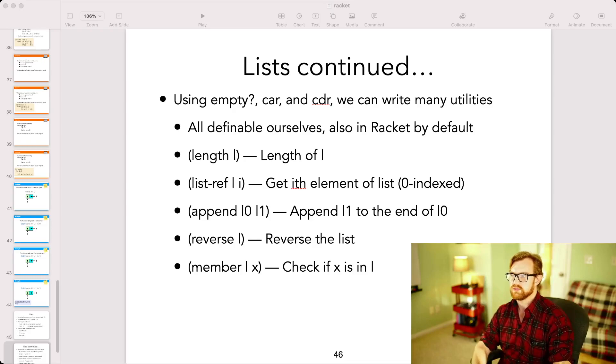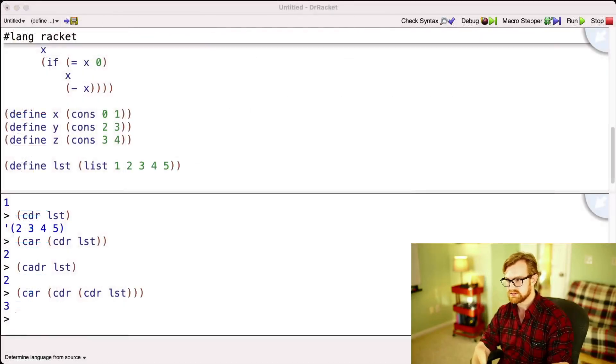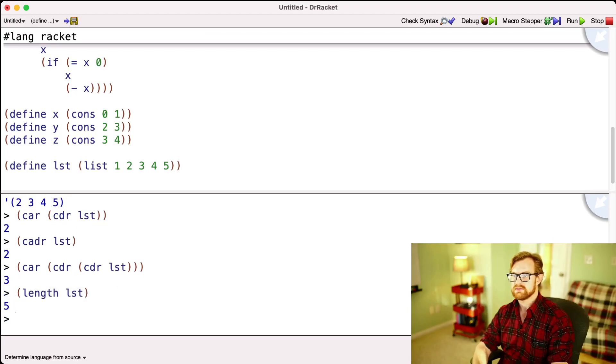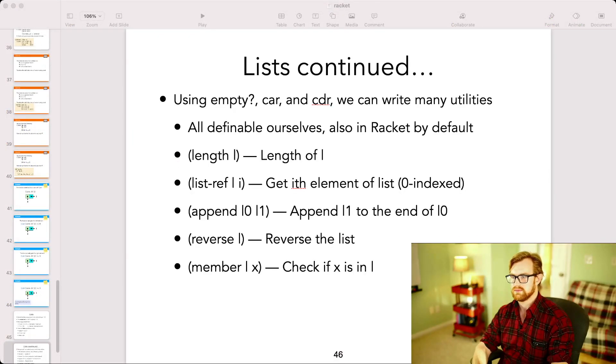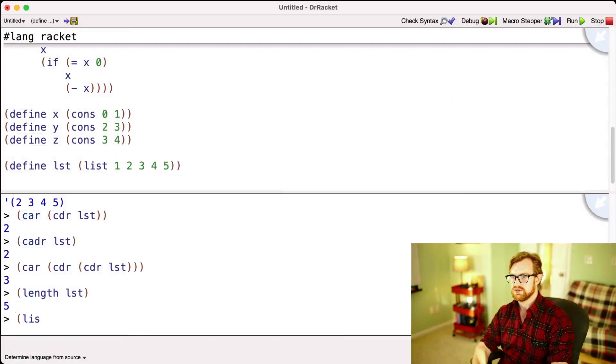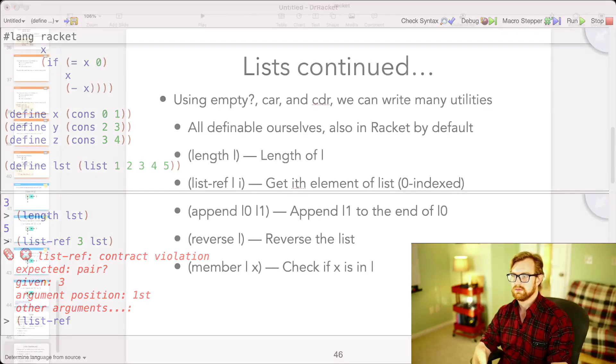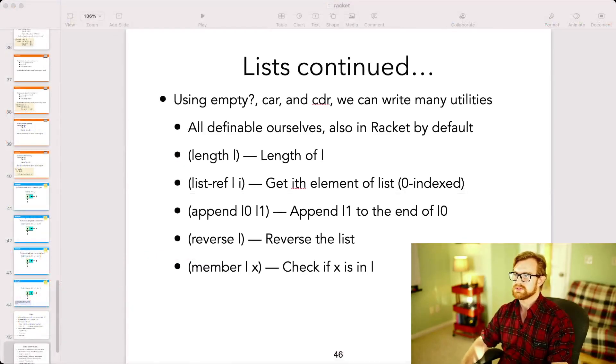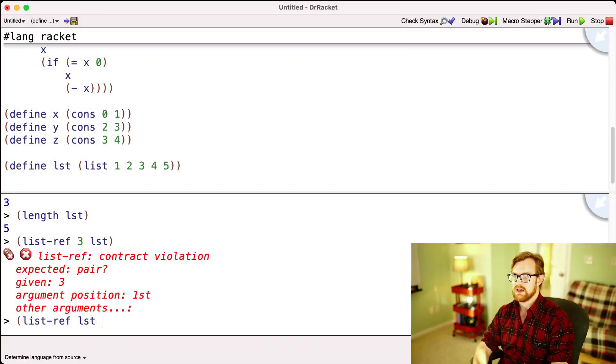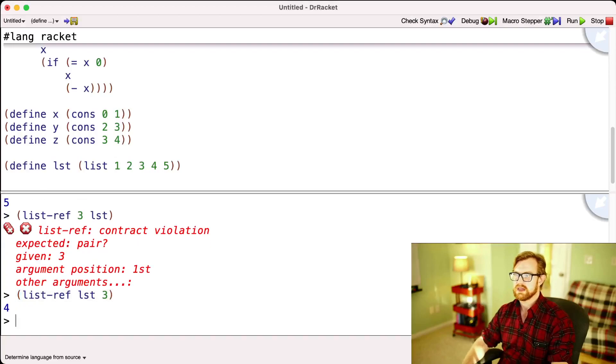So the first one is the function length, which will just calculate the length of the list. So if I go to length of LST, it gives me five. The second is list-ref L i, which gets the ith element of the list. So if I go to list-ref, looks like I got the arguments backwards. LST and 3. Then it gives me four.